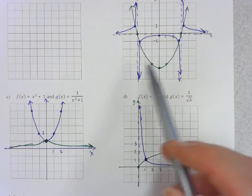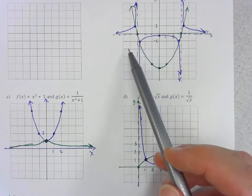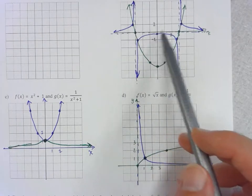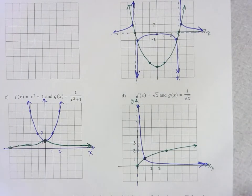Okay, I think you can see that something similar will happen if we have a local maximum on our original function, it'll end up giving you a local minimum on your reciprocal function.